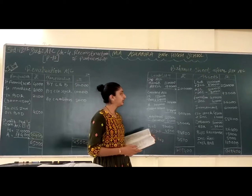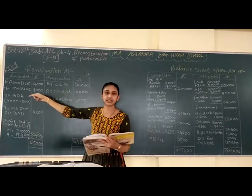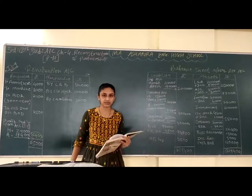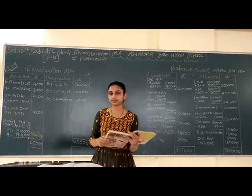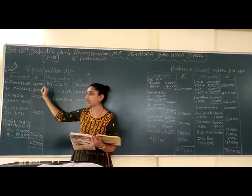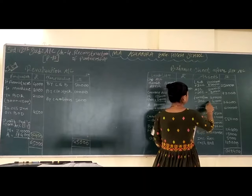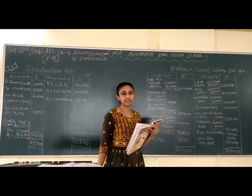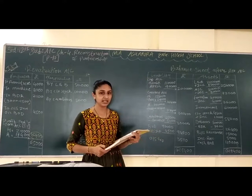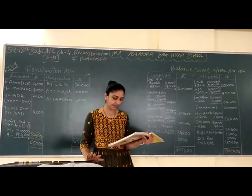Next is machinery. Machinery pehle sheet mein thi 80,000. Usme se 8,000 decrease ho gayi. To machinery ki new value: 80,000 minus 8,000 is 72,000. Uske baad hai furniture. Furniture mein bhi decrease aaya — 4,000 decrease kiya. To furniture 40,000 minus 4,000, after revaluation 36,000. Thereafter investment — investment mein koi bhi changes nahi hai, to investment 60,000 as it is put up karna hai.